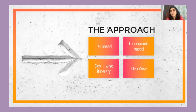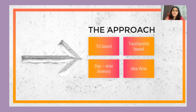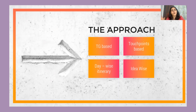Another approach is a day-wise or week-wise itinerary. If your activation plan has four weeks, you could structure it as a teaser phase, then actual execution, then an amplification week. So it becomes week one, week two, week three, week four — or day one, day two, day three for shorter activations. This holds true for events as well.